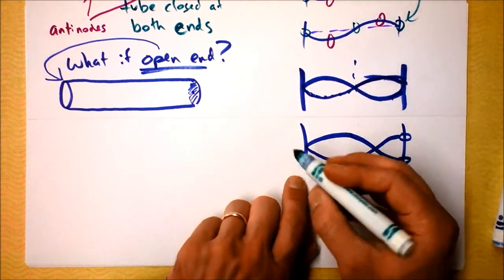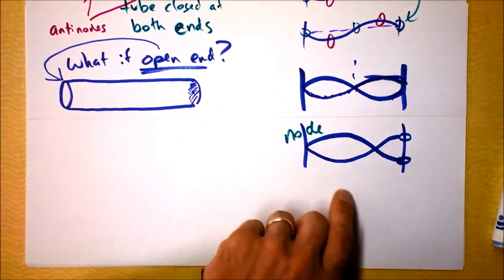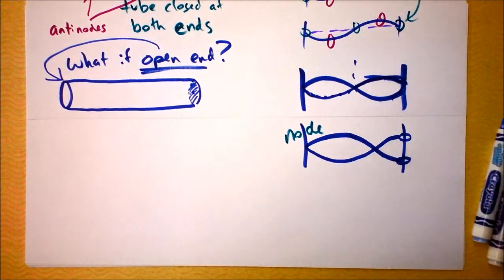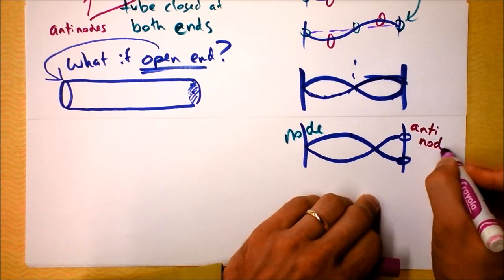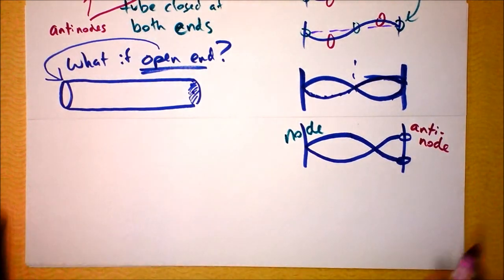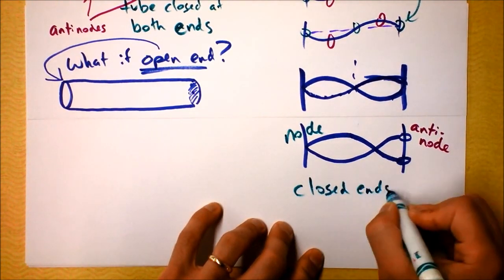So let me stick with these consistent colors. I've got a node here on a closed end. And I've got an anti-node in primrose over here on the open end. And this is generally the case.